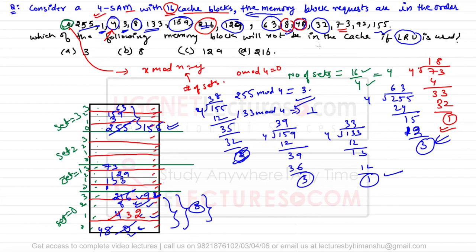The question asks which memory block will not be in the cache if LRU is used. Block 3 is in the cache in set number 3, block 8 is in the cache, and block 129 is in set number 1. However, block 216 is not in the cache because it was replaced by block 92. So the answer is 216, option D.